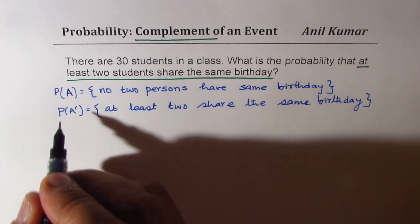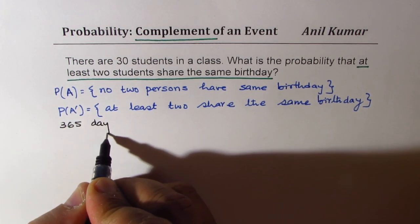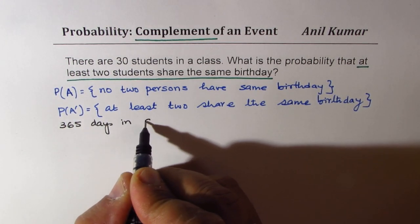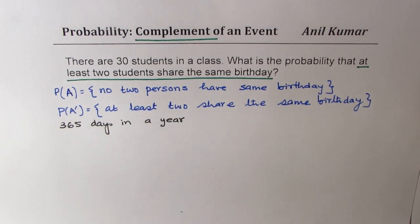So now in a year, we have 365 days. So what is the sample space for us?